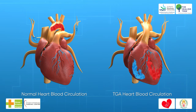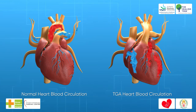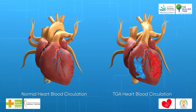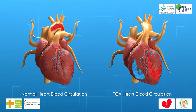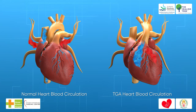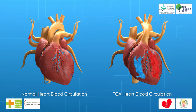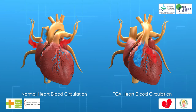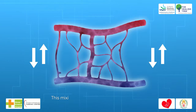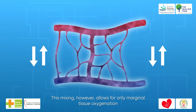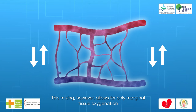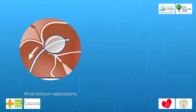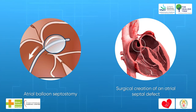Some mixing between the circulations is mandatory to sustain life and is dependent largely on the type of TGA. Patients with TGA and intact ventricular septum survive because of aortopulmonary flow through a patent ductus arteriosus, often enhanced by prostaglandin E1, and a left-to-right atrial shunt through a dilated patent foramen ovale. This mixing allows for only marginal tissue oxygenation, not improved with higher concentrations of inspired oxygen. Atrial balloon septostomy or surgical creation of an atrial septal defect improves systemic oxygen saturation and sets conditions for long-term survival.